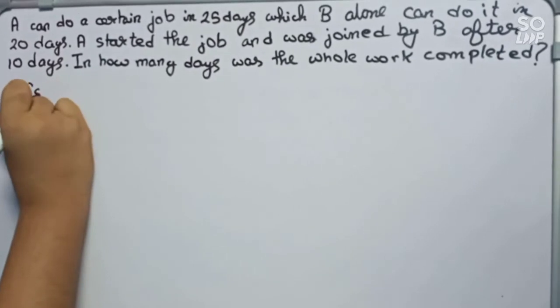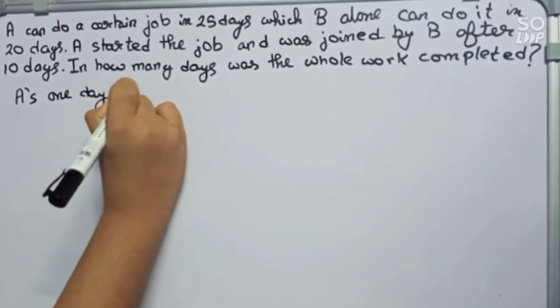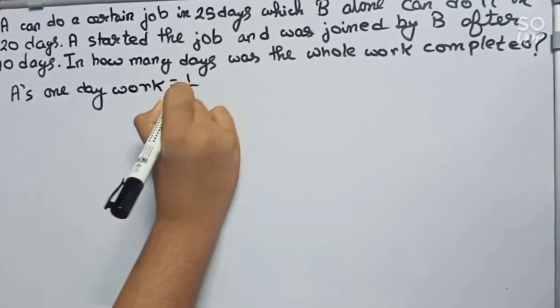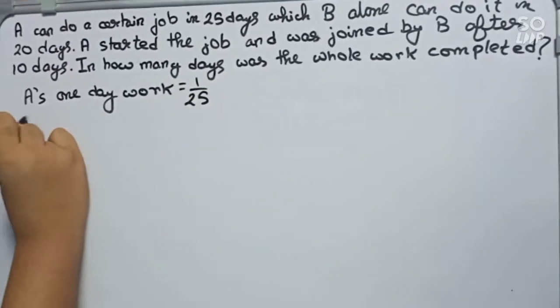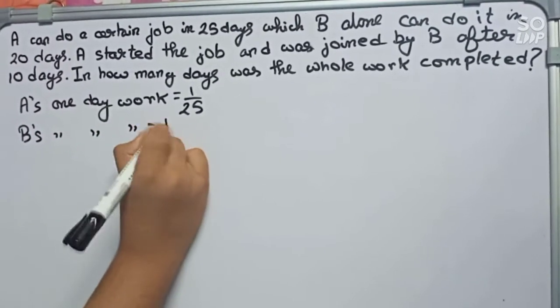First we will find A's one day work. Since A completed the whole work in 25 days, it will become 1 by 25. Now B's one day work is 1 by 20.